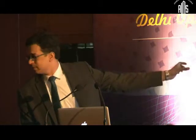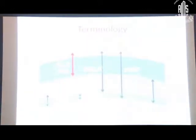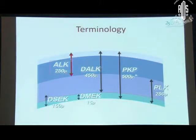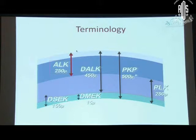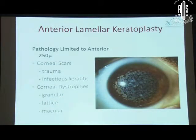I am going to be talking about femtosecond laser assisted lamellar keratoplasty, or FALK for short. This terminology is restricted to procedures where you do a lamellar keratoplasty for the anterior approximately 250 microns of the cornea. Anything deeper is referred to as ALK, and even deeper is called DALK. Typically, this is applied to pathology limited to the anterior 250 microns of the cornea.